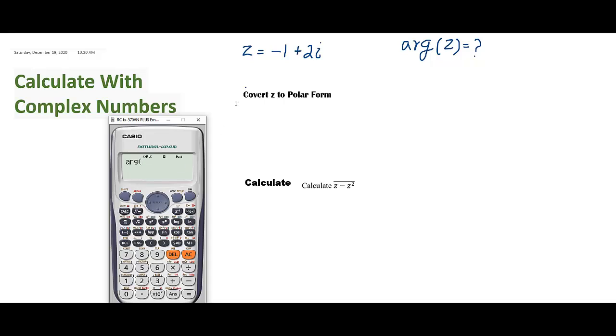So press 1 and write this complex number: minus 1 plus 2, and for this i, press shift and this engineering key. Close the bracket and press enter, and this is our argument of this complex number. Therefore, argument of z is 2.03 up to 3 significant figures.